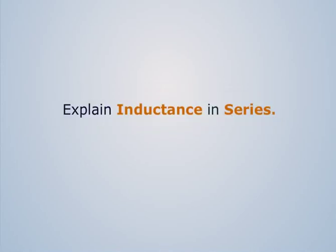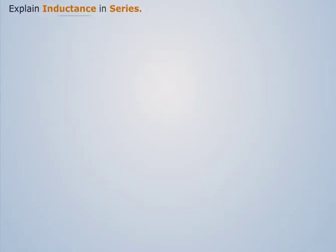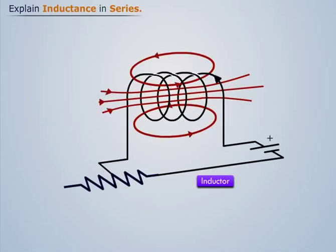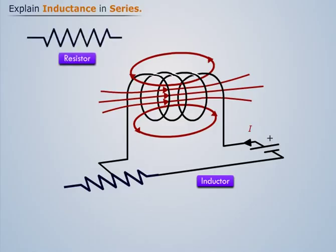Explain inductance in series. Magnetic field is the property which forces us to treat the coil or inductor differently from the resistors and capacitors.